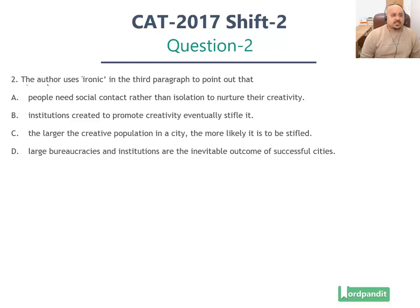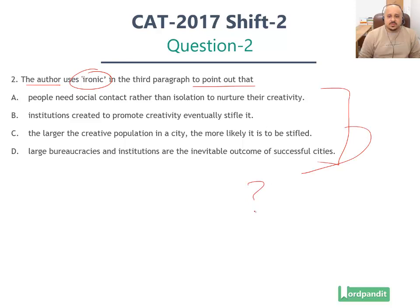The question at hand is: the author uses 'ironic' in the third paragraph to point out that — why has the author used this particular word? And we have four options.